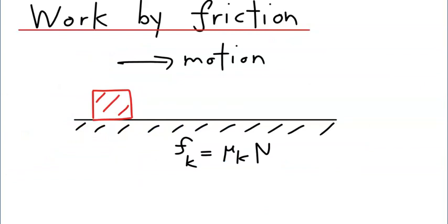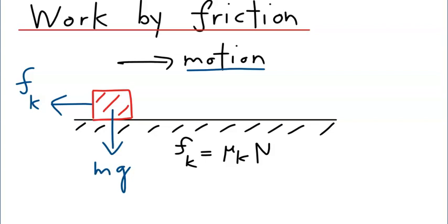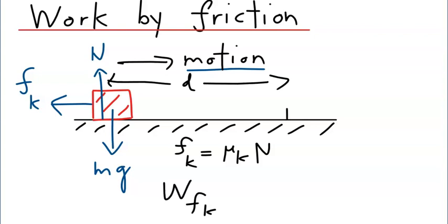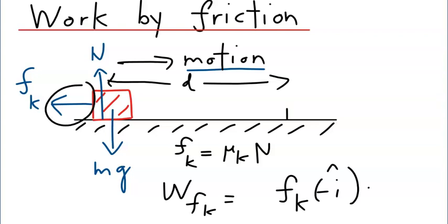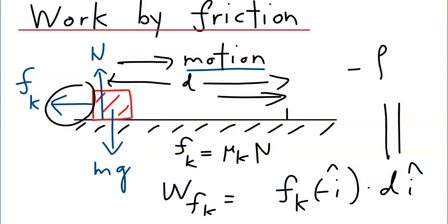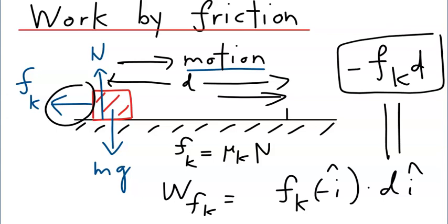Now let's look at work by kinetic friction. As the object moves to the right, it is being slowed down by kinetic friction heading to the left. If the object undergoes a displacement of d meters to the right, the work done by kinetic friction is F_K in the minus i-hat direction dotted into displacement heading to the right. This gives a negative work, because the object is slowing down. The energy is being transferred out of the object.